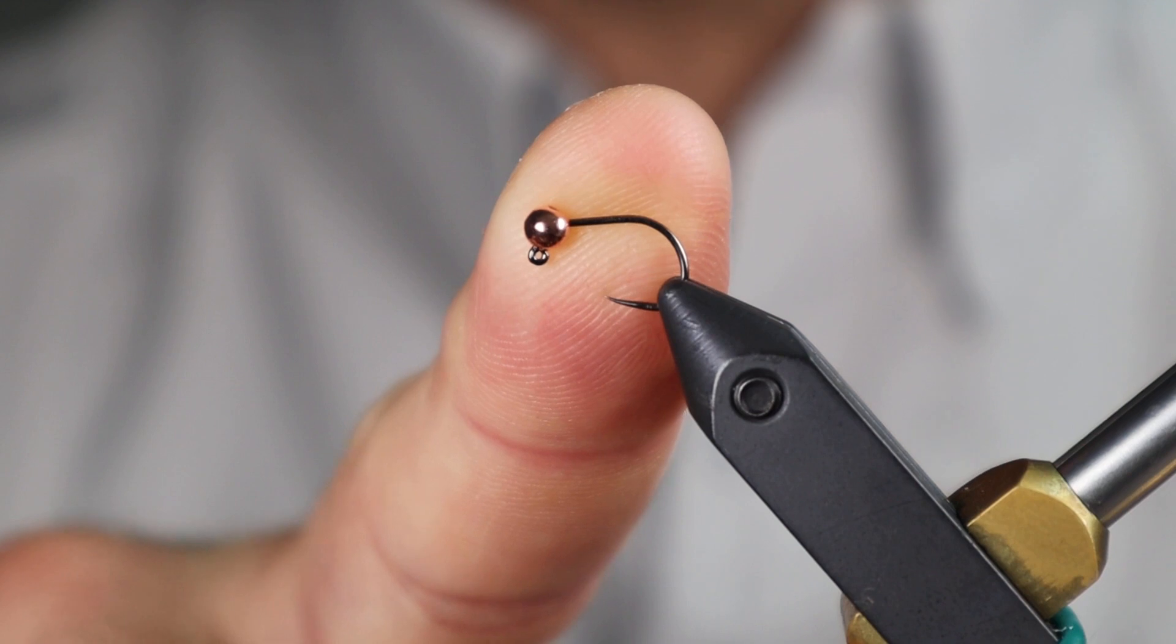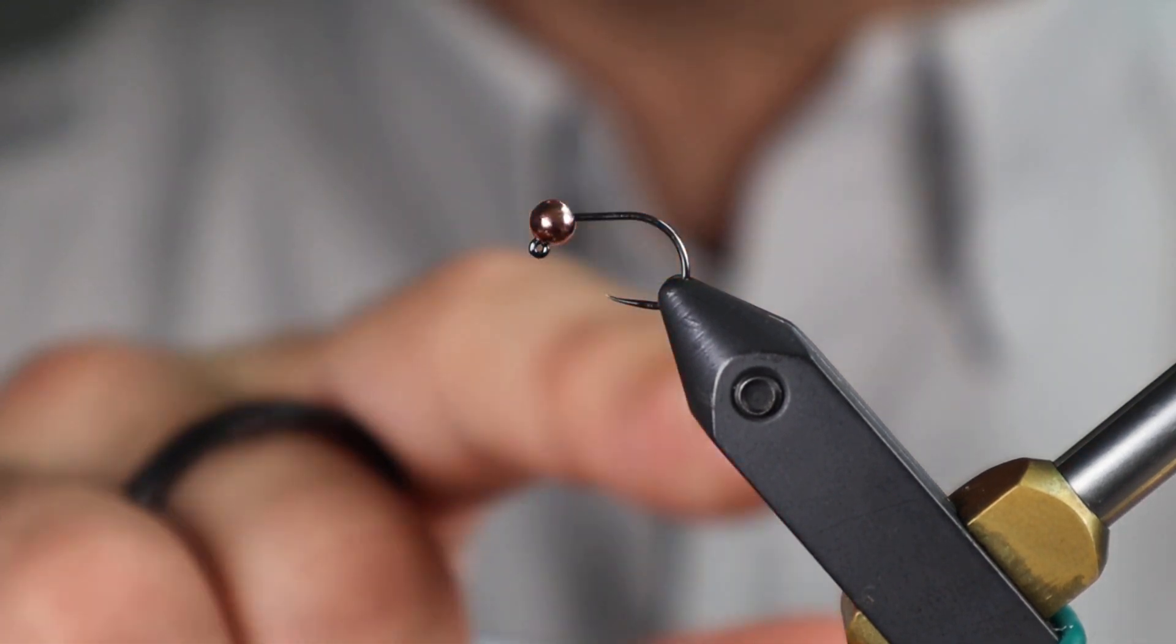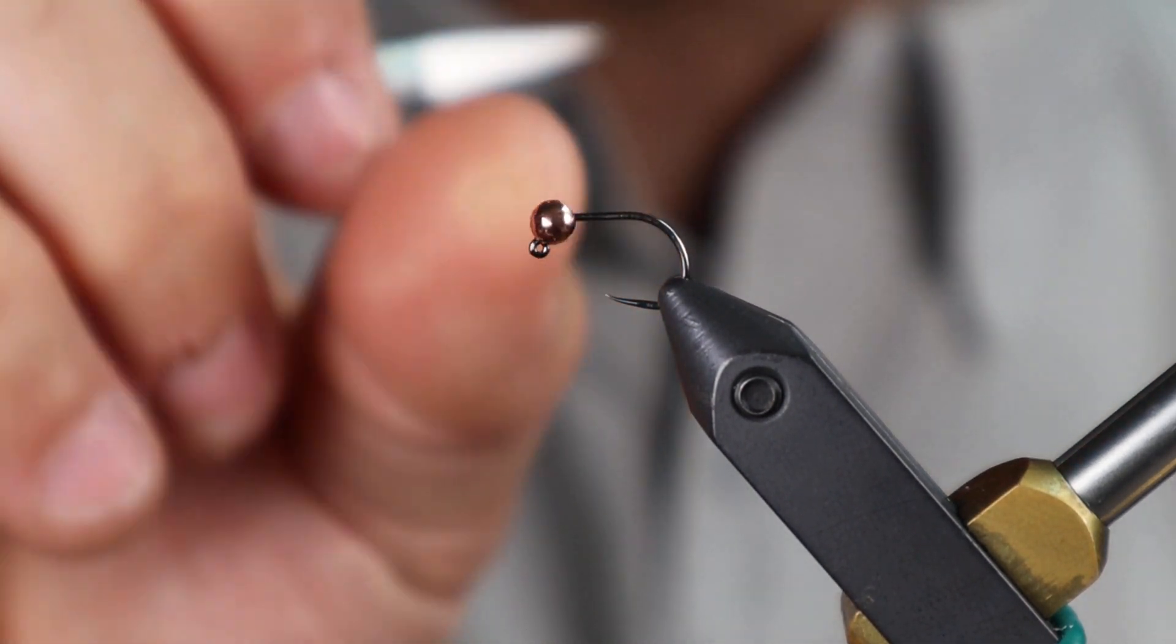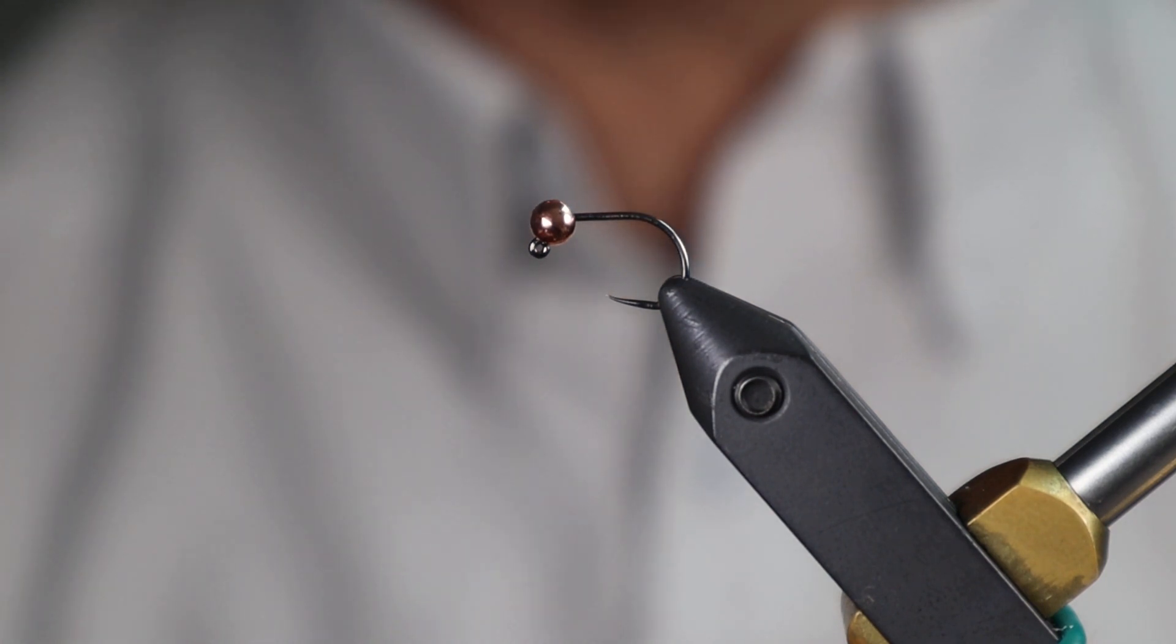First, it's a 450 BL jig hook in the vise. The bead on this is a three and a half millimeter tungsten slotted bead in copper. Just changing the bead alone will change the look of this fly. I often tie these with a matte black bead with no flash other than the wire, and it looks a lot more natural, a little more subtle in the water. On the flip side, you could go like a silver bead which is really going to sparkle. That'll completely change the look of the fly.